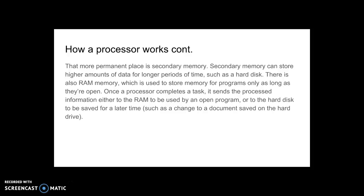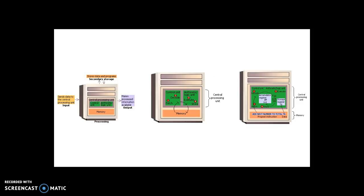That more permanent place is secondary memory. Secondary memory can store higher amounts of data for longer periods of time, such as a hard disk. There is also RAM memory, which is used to store memory for programs only as long as they are open. Once a processor completes a task, it sends the process information either to the RAM to be used by an open program, or to the hard disk to be saved for a later time, such as a change to a document saved on the hard drive.